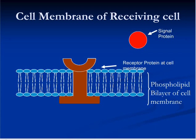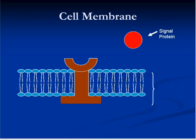So, the signal protein is moving towards the receptor protein at the cell membrane.